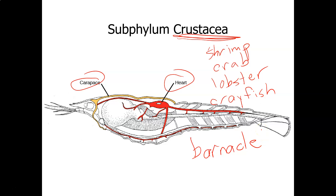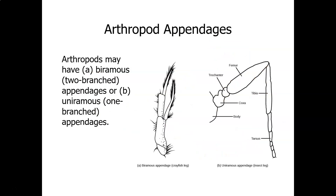Barnacles grow attached to boats and fishing piers. Regarding arthropod appendages, they may have biramous — or two-branched — appendages, or they may have one-branched appendages. This is an insect leg, which has one branch, and this is the leg of a crayfish, which has two branches.